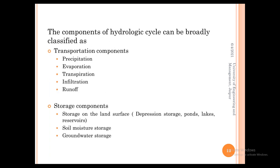The components of the hydrologic cycle can be classified into two broad categories. The first is the transportation component, which involves precipitation, evaporation, transpiration, infiltration, and runoff. The second is the storage component, which includes surface storage such as depression storage, ponds, lakes, and reservoirs; soil moisture storage; and groundwater storage.